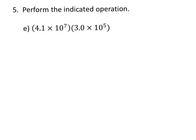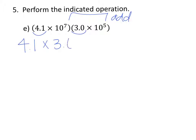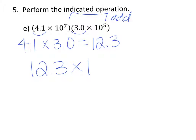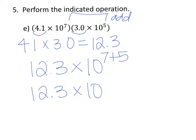To multiply numbers in scientific notation, the exponents do not need to be the same. So it's completely fine — we do not need to change the exponents just because they're different. All we need to do is simply multiply the numbers and then add the exponents. So 4.1 times 3.0 equals 12.3. We have 12.3 times, and then we're going to add the exponents, 7 plus 5. So we have 12.3 times 10 to the 12th power.